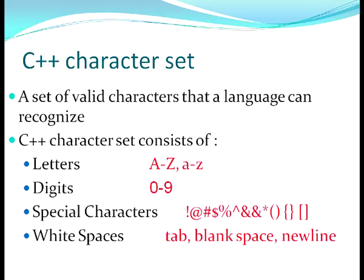Other than special characters, we have white spaces. White spaces are those characters which cannot be seen on the monitor. For example, when you press the space bar, you can see the cursor moving but nothing appears on the screen. Similarly, when you press the tab key, the cursor moves by eight spaces but nothing is seen on the screen. So these are white space characters — tabs, blank spaces, new lines, all these are white space characters.